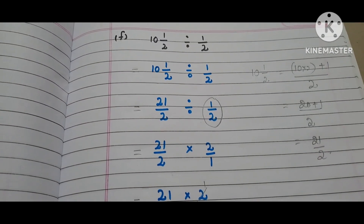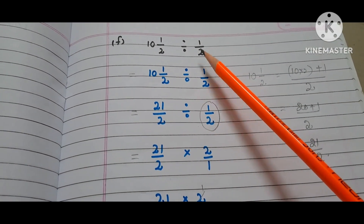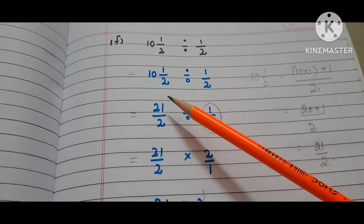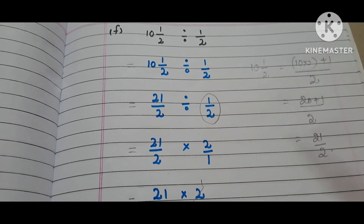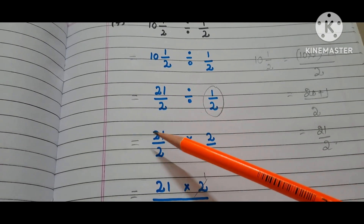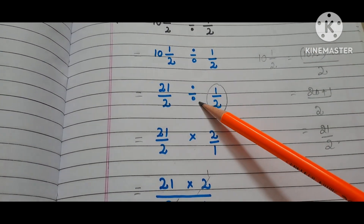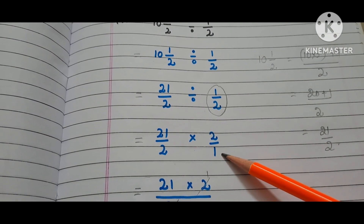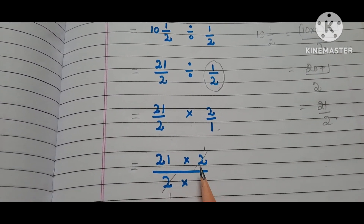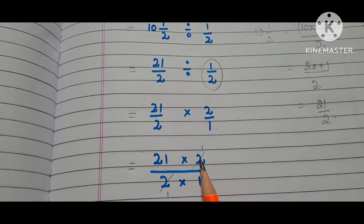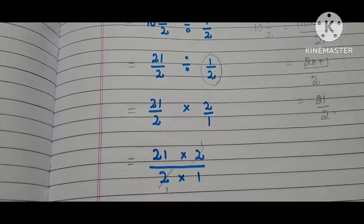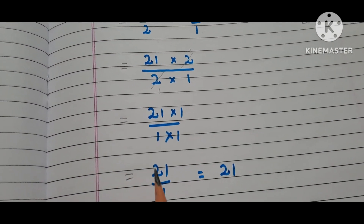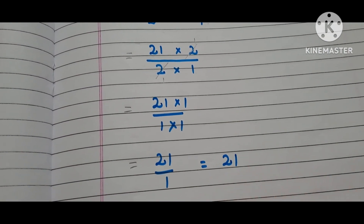Now let us go to the F bit. The question is 10½ divided by 1/2. Here, 10½ is a mixed fraction. First, convert the mixed fraction into an improper fraction: that is 21/2 divided by 1/2. Copy down the first fraction 21/2. Write the multiplication symbol instead of the division symbol and write the reciprocal of 1/2, which is 2/1. That is 21 times 2 by 2 times 1. Here we can reduce 2 and 2: we have 21 times 1 by 1 times 1, that is 21/1, which equals 21. The answer is 21.